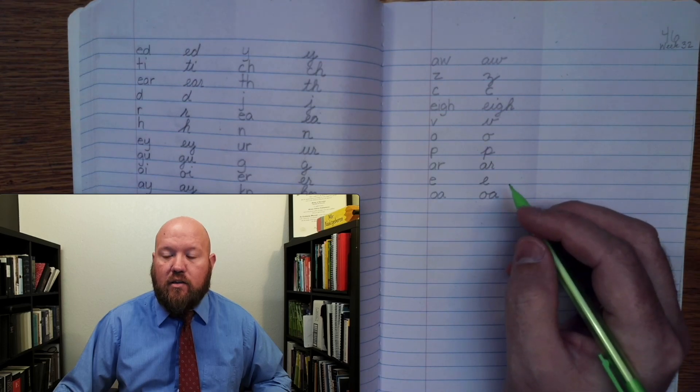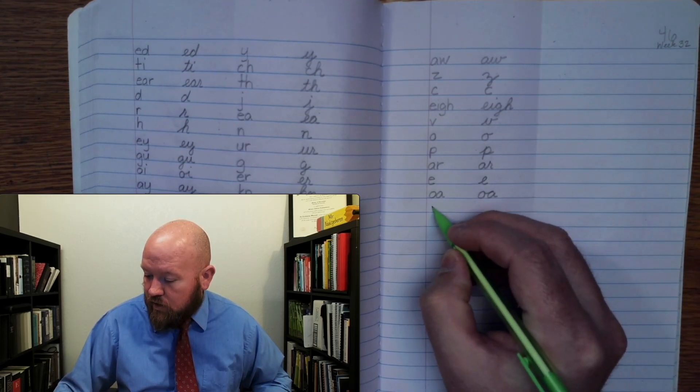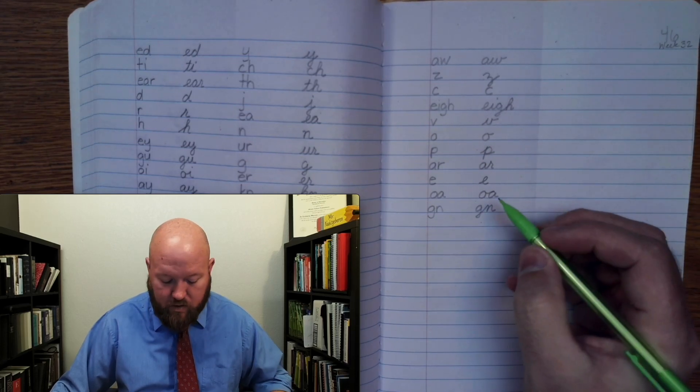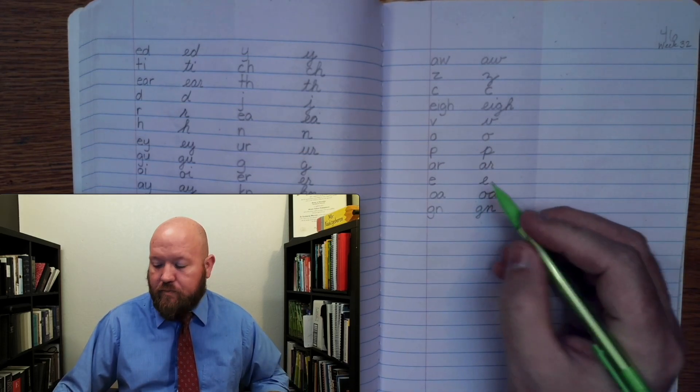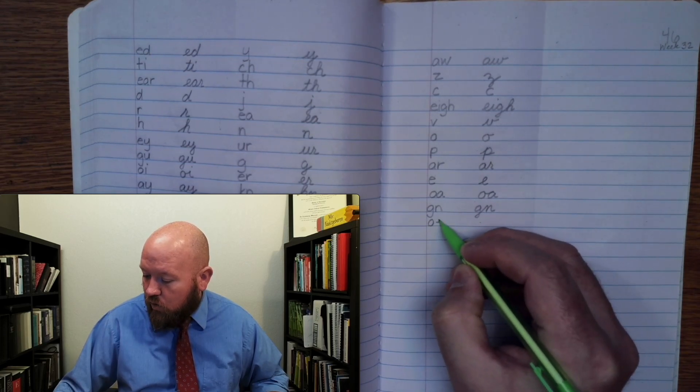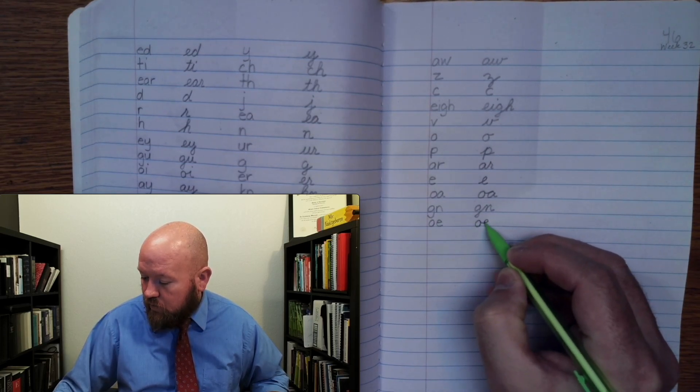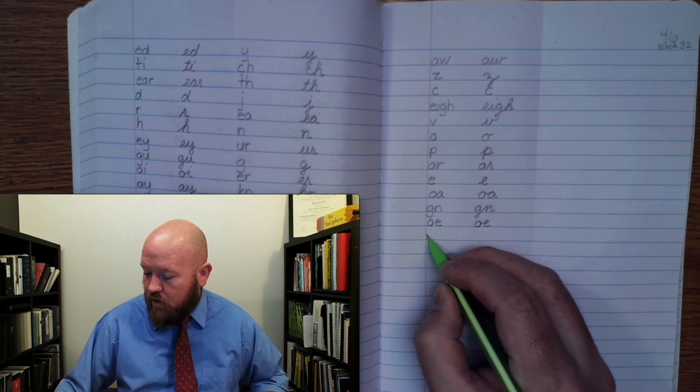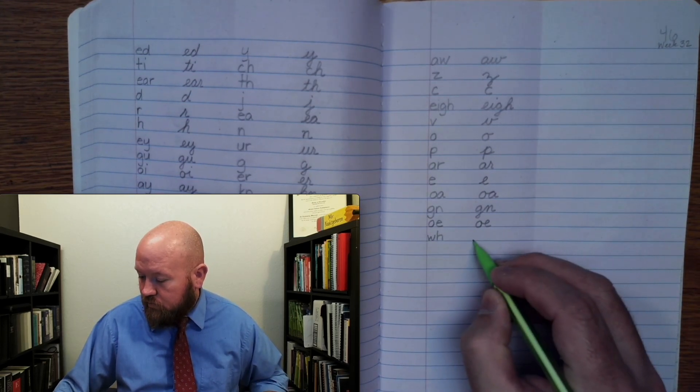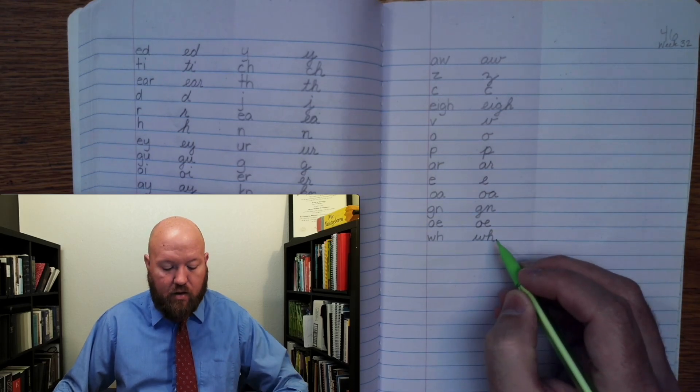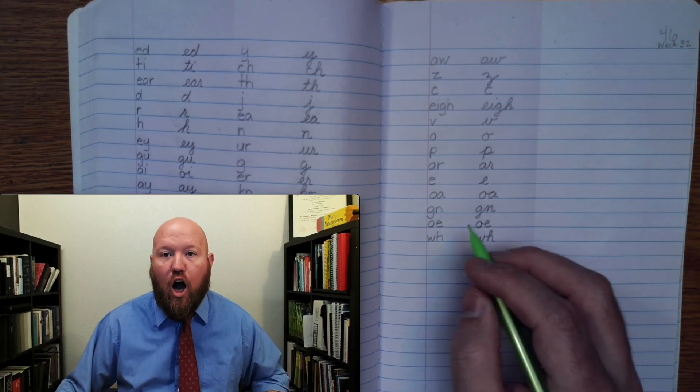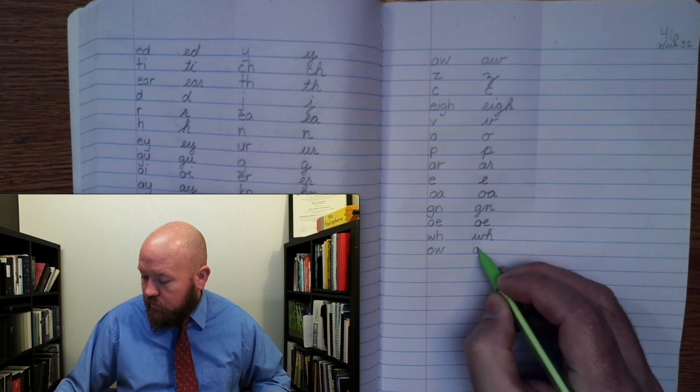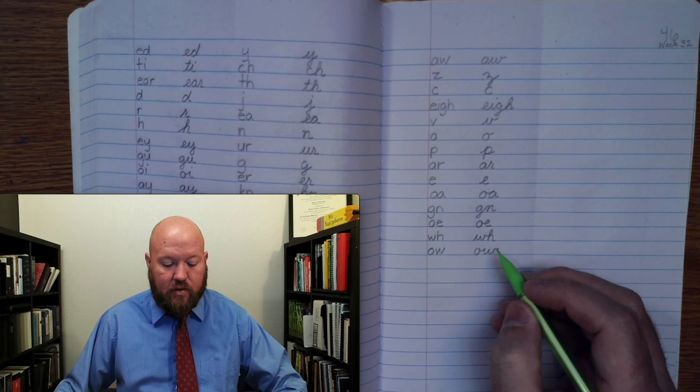Next one. N, two letters. N, two letters. Next one. O. O. Next one. J. J. Next one. Ow, O. Ow, O.